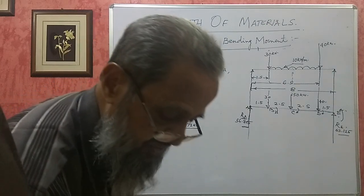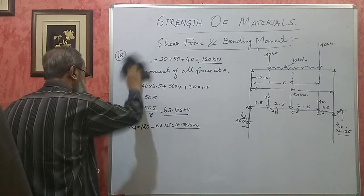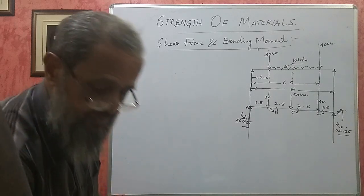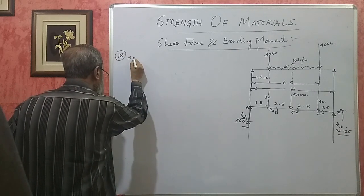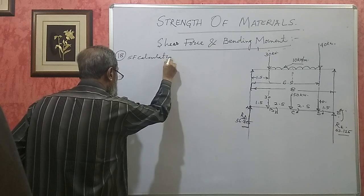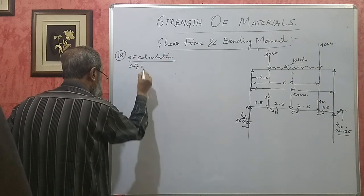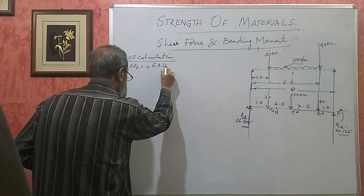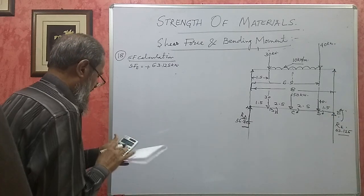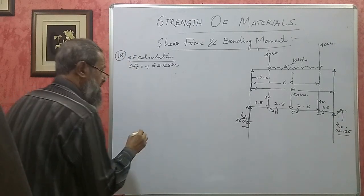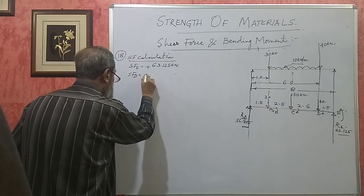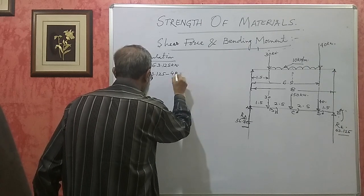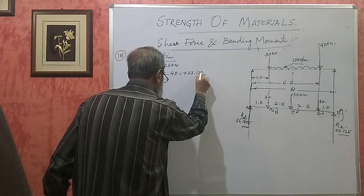Next, we perform shear force calculations. SF at E = +63.125 kilonewton (upward reaction). SF at D = +63.125 minus 40 = +23.125 kilonewton.